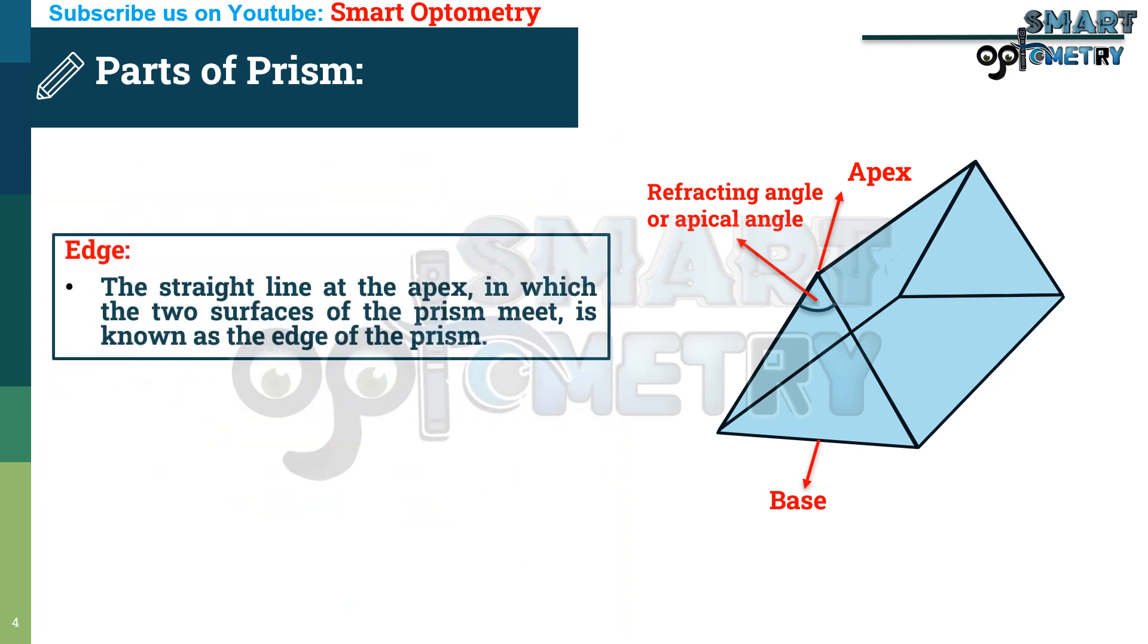Edge. The straight line at the apex in which the two surfaces of the prism meet is known as the edge of the prism.